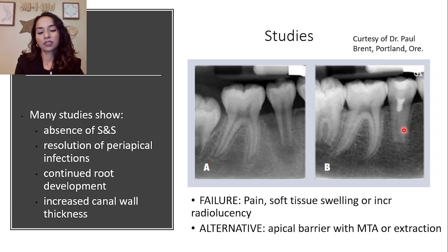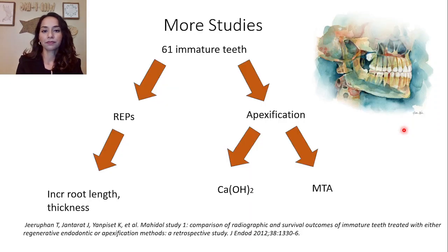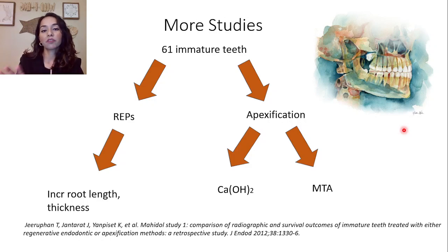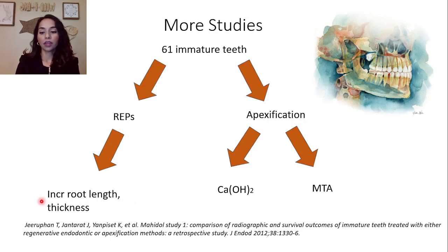Cases would be considered failures if the patient presents with pain, soft tissue swelling, or increases in radiolucency — with alternatives being placement of an apical barrier using MTA or extraction. Another study took 61 immature teeth, treating some with REPs and others with apexification using calcium hydroxide and MTA, and found that teeth treated with REPs had increased root length and thickness.